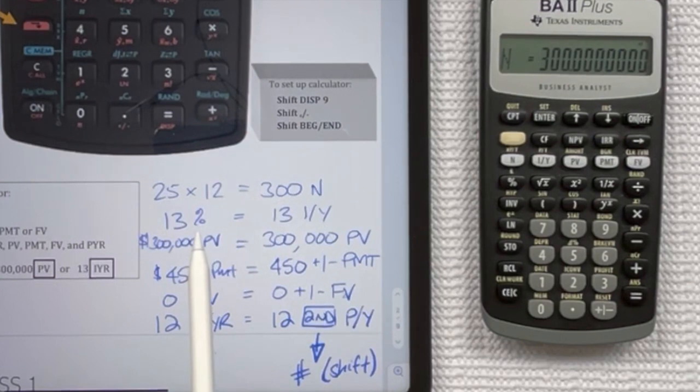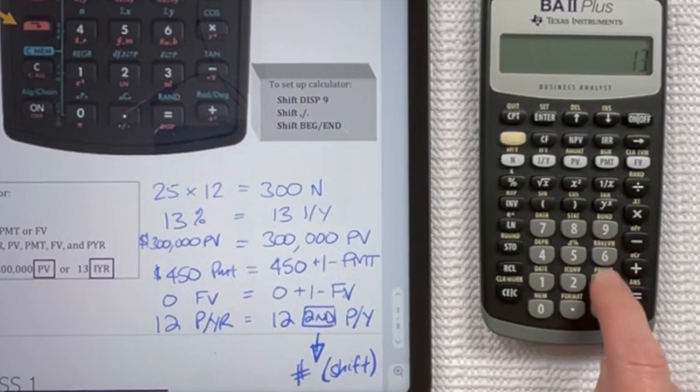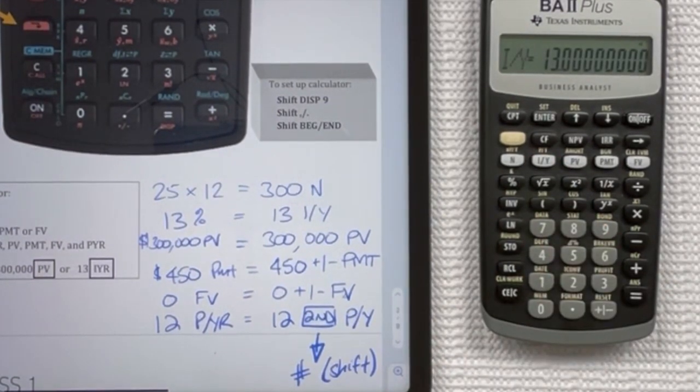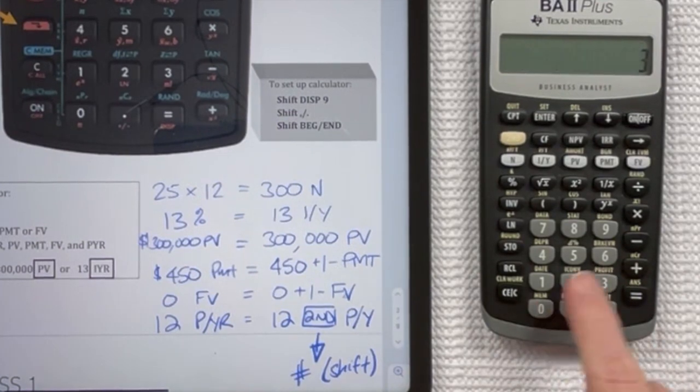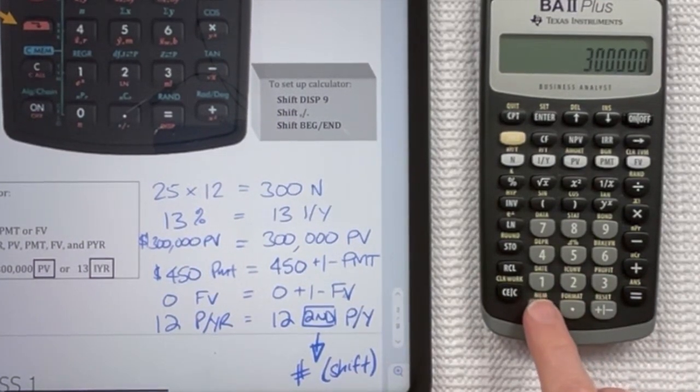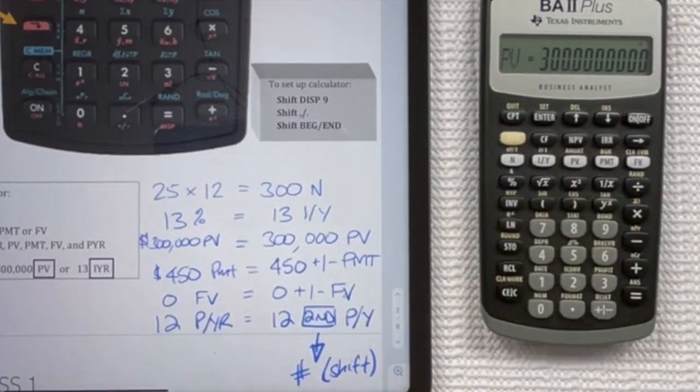If you had a 13% mentioned in the question, and you wanted that to go in your IYR, you would press 13 and then IY. $300,000 in your PV, that's what you were going to borrow. You would press 300,000 and then push your PV key.